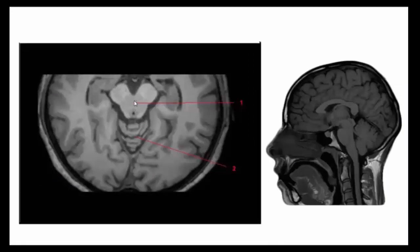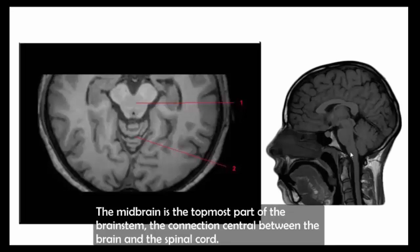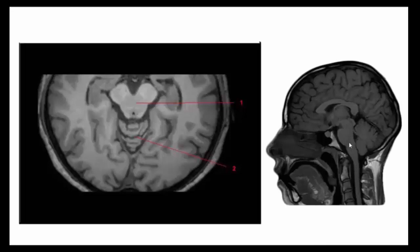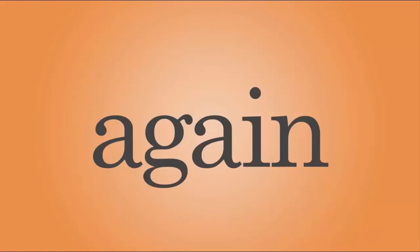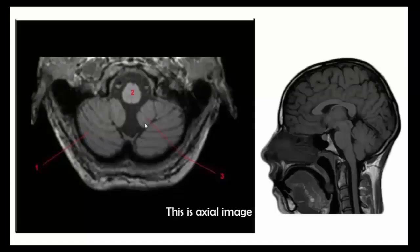This is the midbrain on axial view and sagittal view. The midbrain is the topmost part of the brainstem — the connection center between the brain and spinal cord. The vermis is the unpaired median portion of the cerebellum that connects the two cerebellar hemispheres.